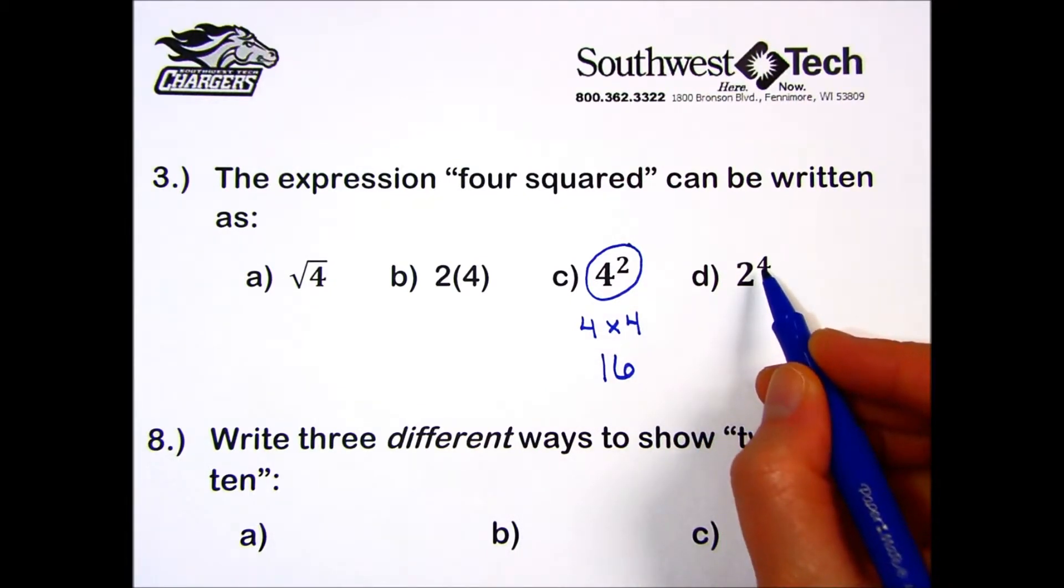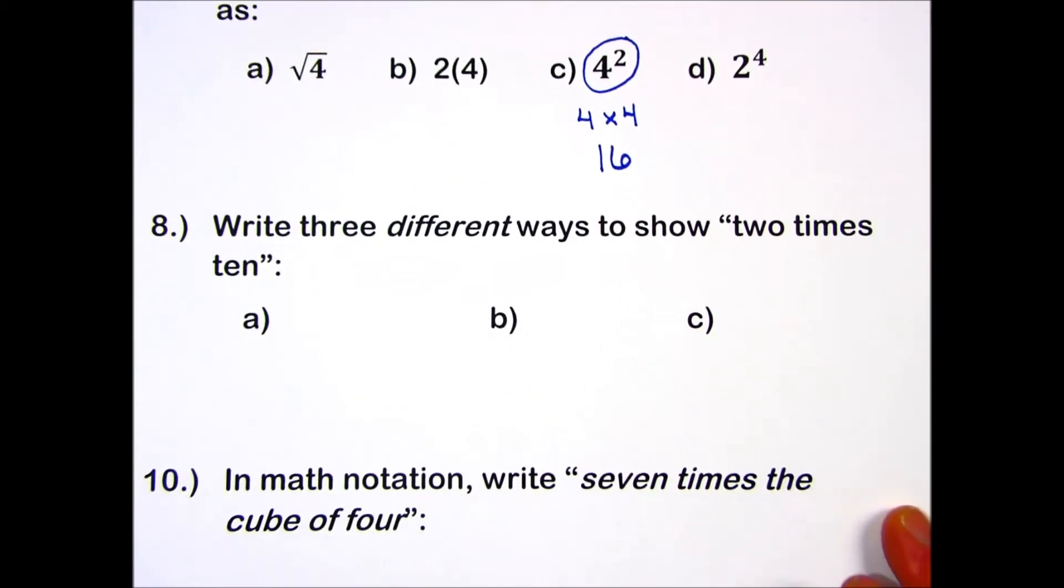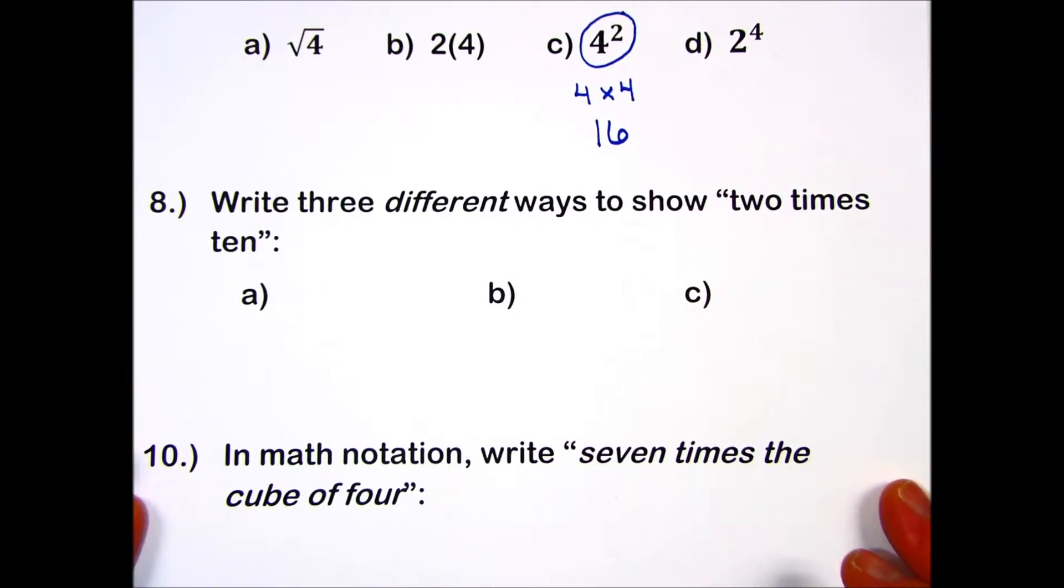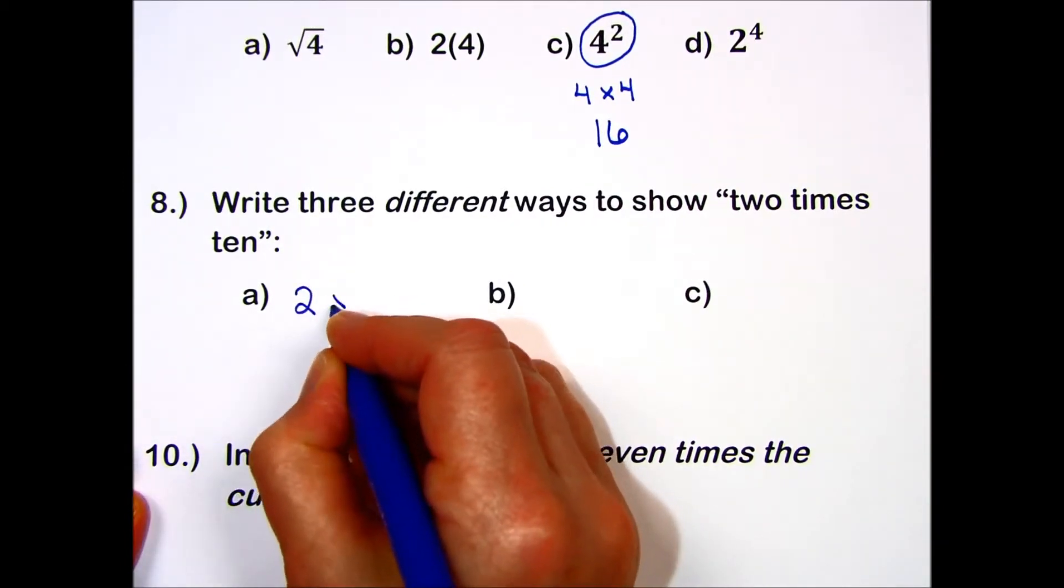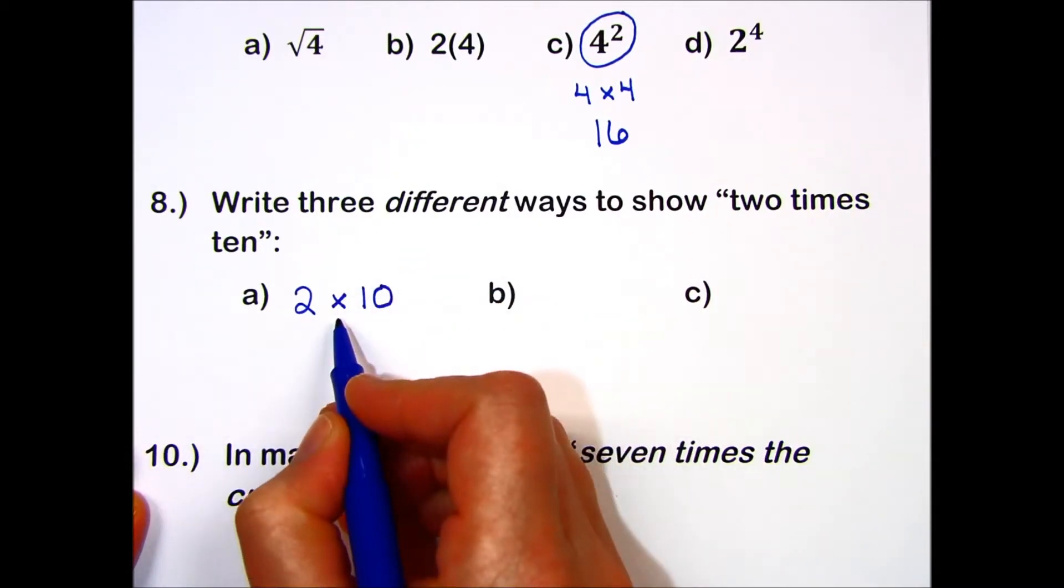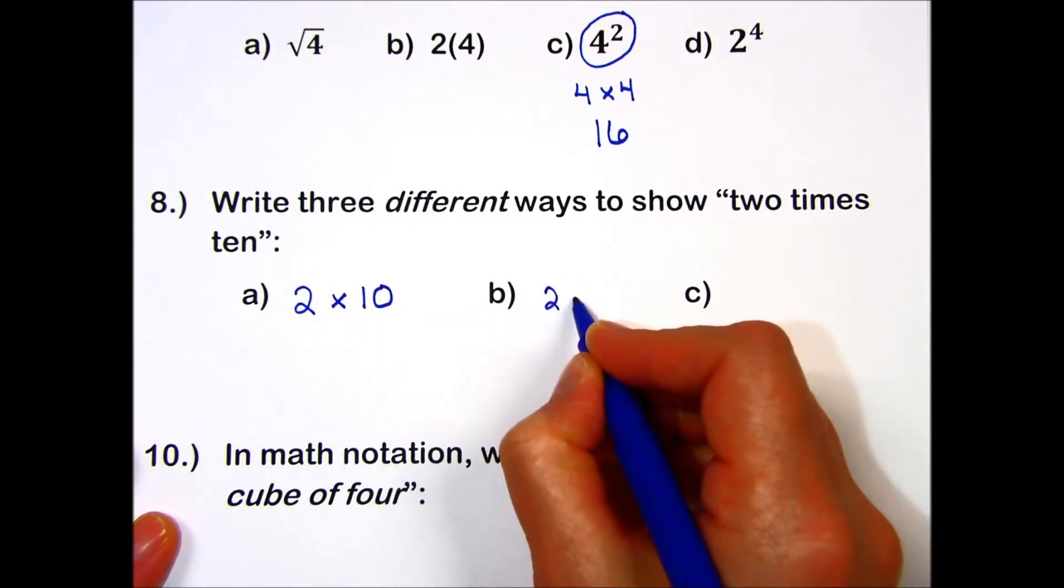Let's try number eight together. Write three different ways to show two times ten. I can use an X. Sometimes we avoid this when writing mathematics because we also use the letter X for some purposes, but this is the symbol that you will find on your calculator key.